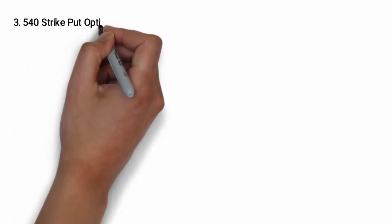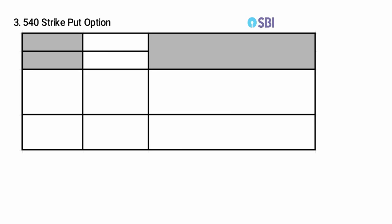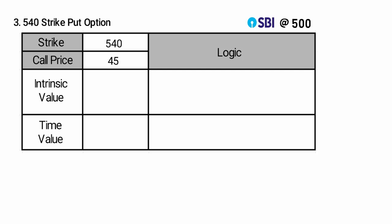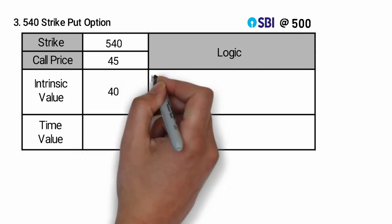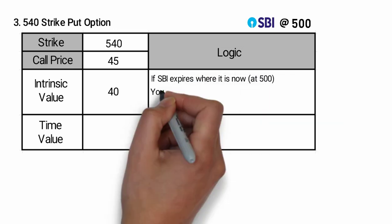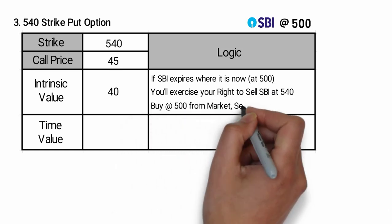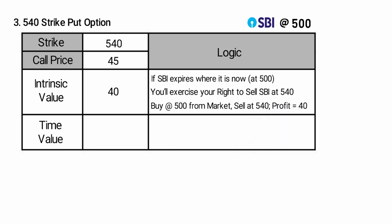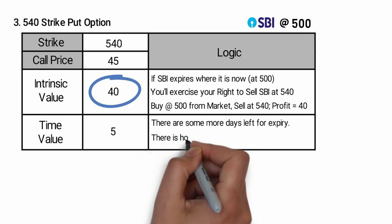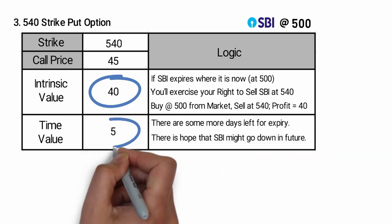Number three: the 540 strike put option. This gives you the right to sell SBI at 540 rupees. The strike is 540 and the put option price is 45 rupees. Can you guess what is the intrinsic value here? Exactly — 40 rupees. Because if SBI expires at 500, you will exercise your right to sell SBI at 540 and make 40 rupees. This makes the option worth at least 40 rupees. The time value here is 5 rupees, because there are some days left to expiry and there is a hope that SBI might go down in future.